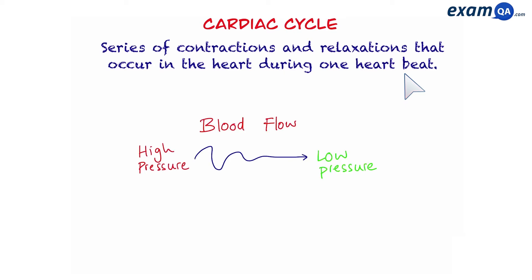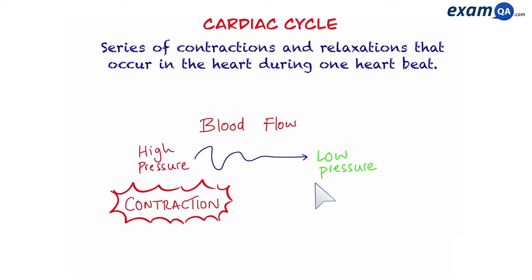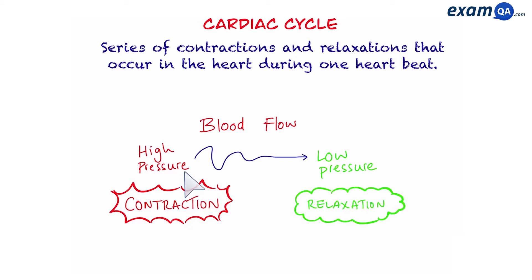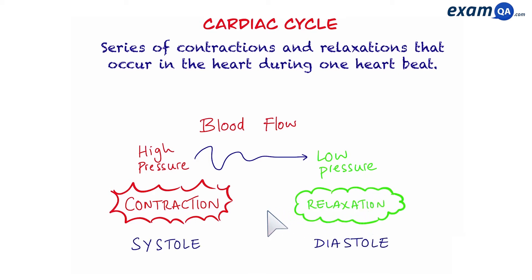Before we talk about the cardiac cycle, a quick reminder that blood always flows from an area of high pressure to an area of low pressure. What causes high pressure in the heart? That's contraction — whenever we have contraction, that chamber has high pressure. Low pressure is caused by relaxation. In the cardiac cycle, we're introduced to two new words: systole, which represents contraction, and diastole, which represents relaxation.